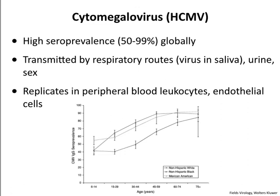Cytomegalovirus is another herpes virus with high seroprevalence—which is why at the beginning of this course I said you all have three or four herpes viruses. CMV is transmitted by respiratory routes, urine, sexual transmission, and at birth. It replicates in peripheral blood cells and in cells that make up blood vessels.